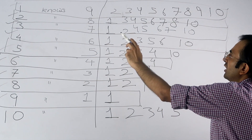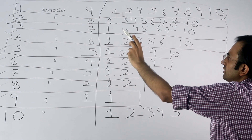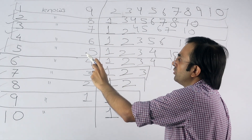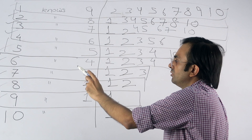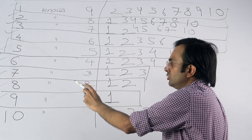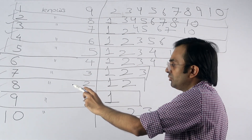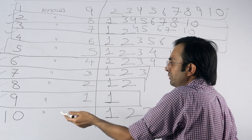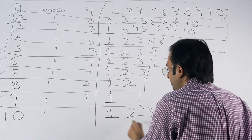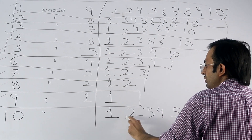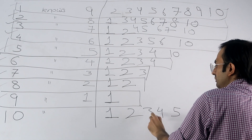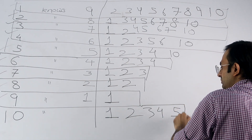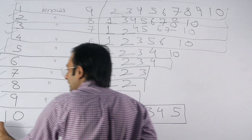So we found out whom all one knows, whom all two know, whom all three know, whom all four know, whom all five know, whom all six know, whom all seven know, whom all eight know, whom all nine know. None of these people can add any more people, so this is the final list for ten. Ten knows person number one, person number two, person number three, person number four, person number five — and that is our answer.